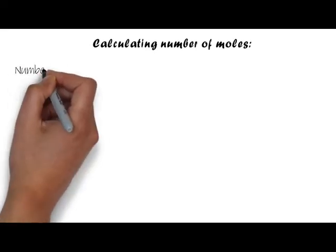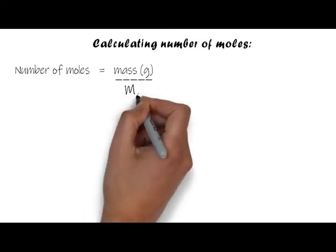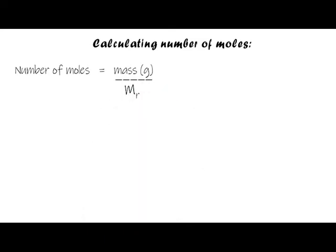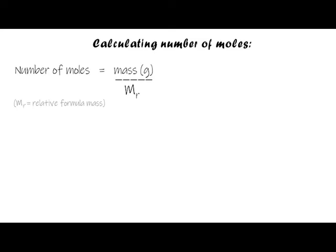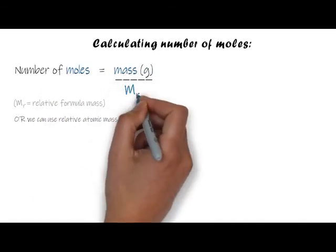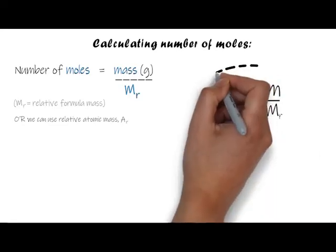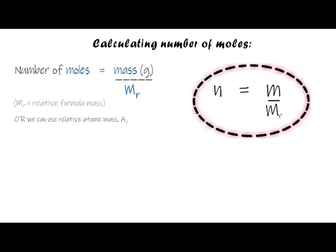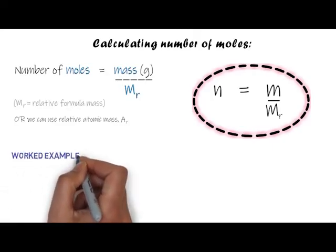We need to be able to calculate the number of moles of a substance. If you know the mass of your sample, you need to say how many moles are present. We do that using this equation: number of moles equals mass in grams divided by Mr, the relative formula mass. In shorthand: n = m / Mr. You need to learn that equation.